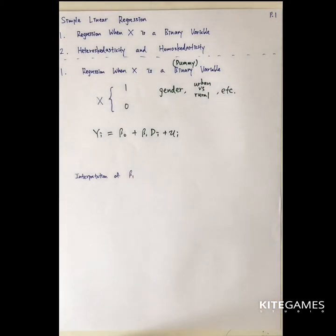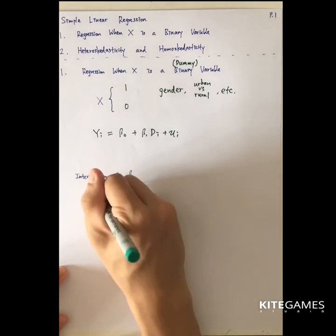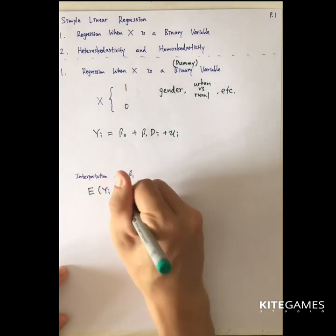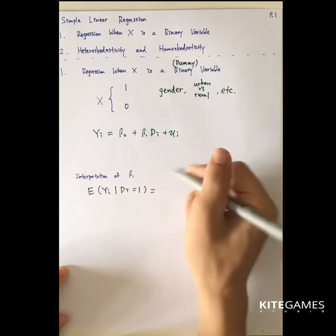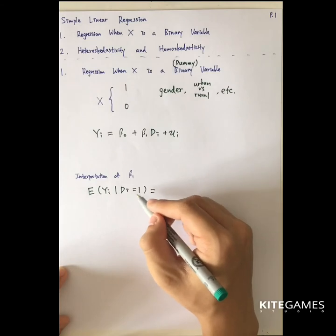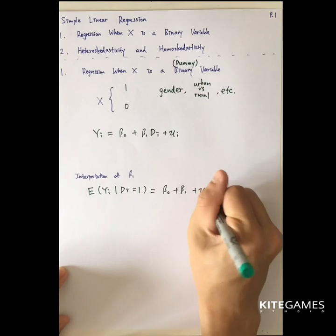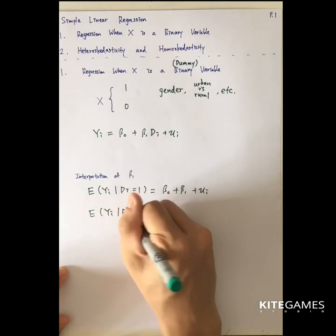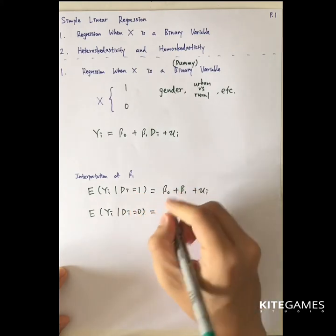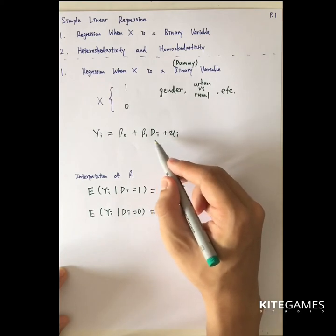What is the interpretation of beta 1? If you want to understand the meaning of beta 1, you need to do two steps. First, calculate the expected value of y given the dummy variable d_i equal to 1. If you substitute d_i equal to 1, you get beta 0 plus beta 1 plus u_i. Next, calculate the expected value of y given d_i equal to 0, which gives you beta 0 plus u_i, because anything multiplied by 0 is 0.